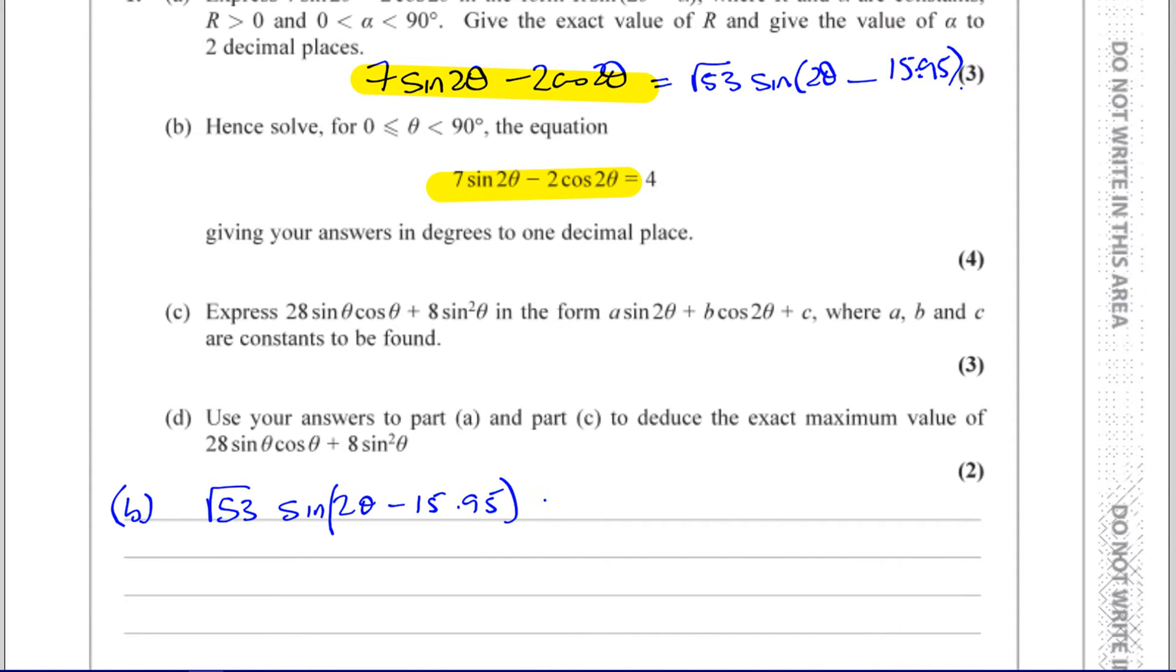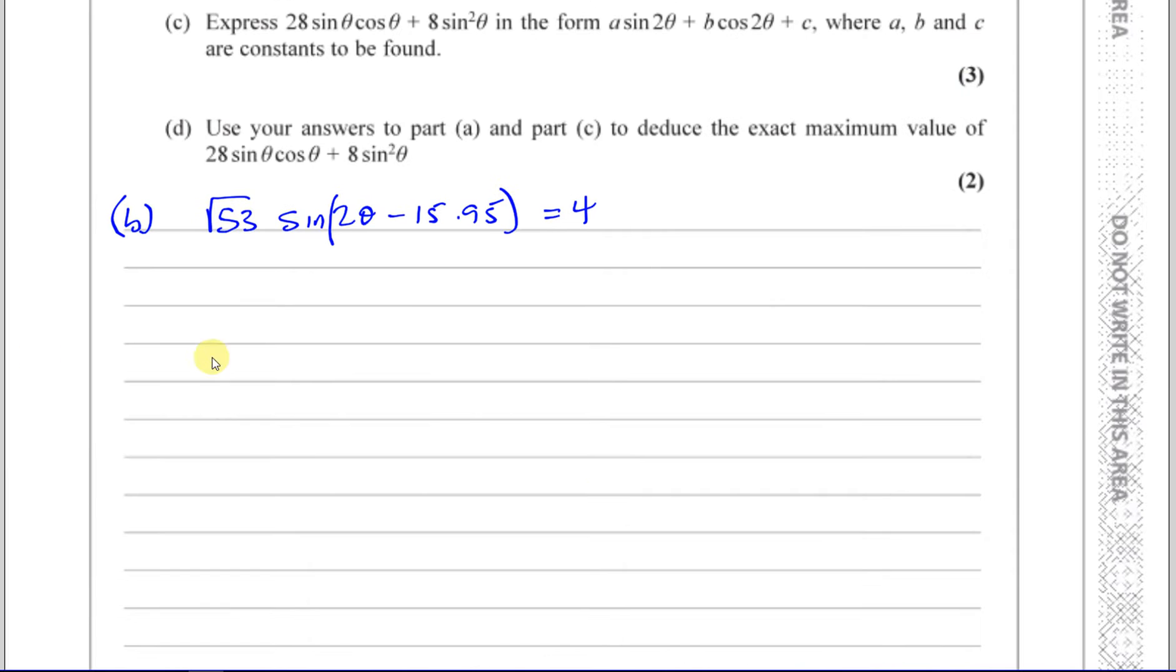First of all, let's divide both sides by √53, so we have sin(2θ - 15.95°) equals 4 divided by the square root of 53, and we've got to find what the angle is. Now one thing we need to do here is to modify the limits.